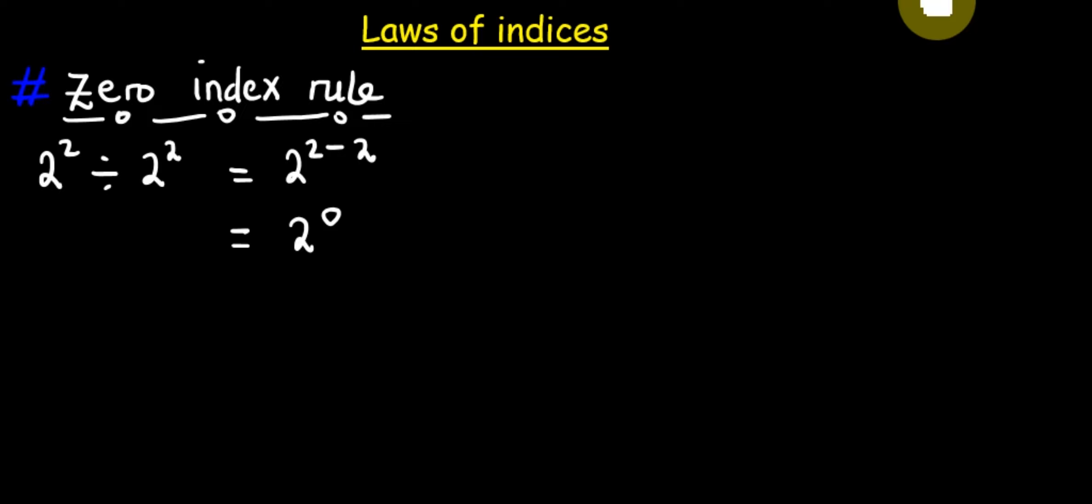We also know that 2 raised to power 2 divided by 2 raised to power 2 is equal to 1. Now, what does that mean? 2 raised to power 0 is equal to 1.